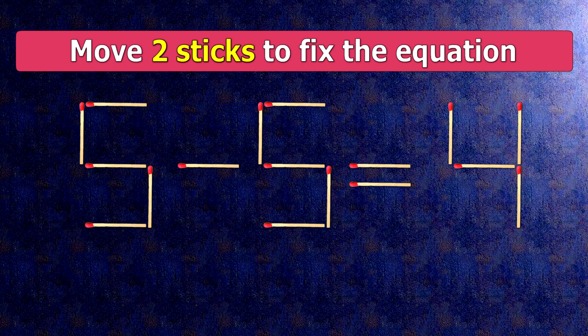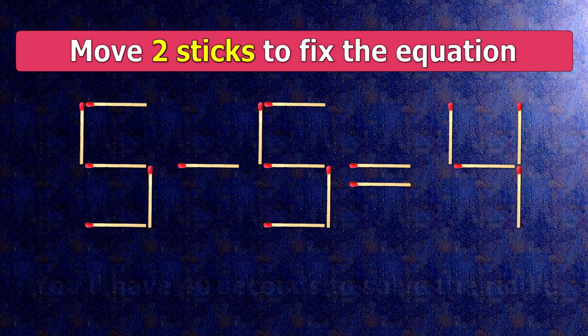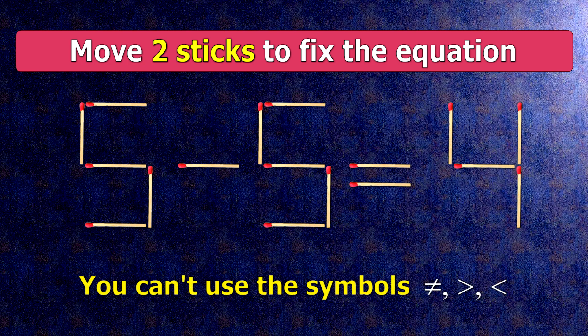We have the equality 5 minus 5 equals 4. Our equality is wrong. We need to move two matches to make our equality correct.